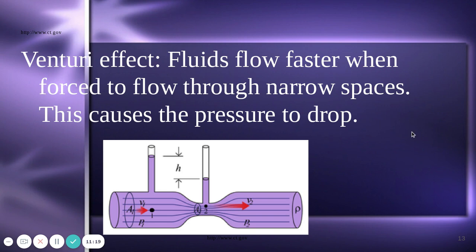The Venturi effect explains how fluids flow faster when forced through narrow spaces, which causes the pressure to drop. For example, take a water hose: water comes out at a normal rate. But if you put your thumb over the tip of the hose, covering part of it and creating a narrower space for the water to flow through, it shoots out much faster. That's the Venturi effect.